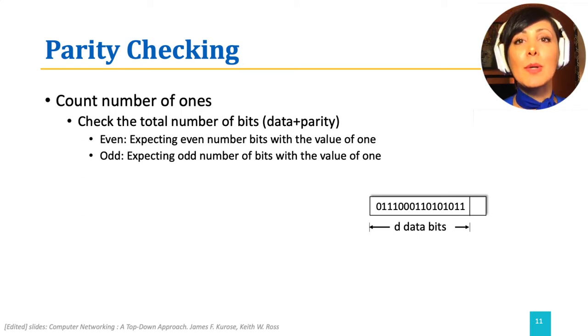If the desired number of ones in the mechanism we use within the d plus one bits is odd, we call the mechanism an odd parity mechanism. If the desired number of ones in the mechanism within the d plus one bits is even, we call the mechanism an even parity mechanism.